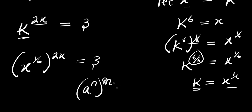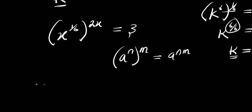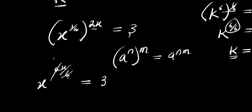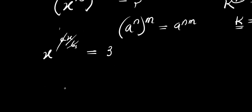Using the identity: a power 1 over 6 raised to the power of n equals a power n over 6. That means I have x to the power of 2x times 1, that is 2x divided by 6, equals 3. The 2 and 6 simplify — 2 divided by 6 reduces — so we have x power x divided by 3 equals 3.